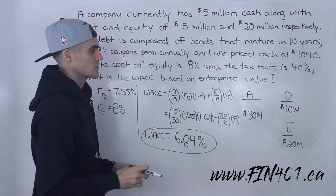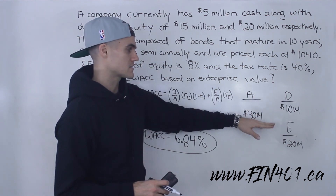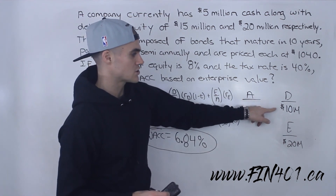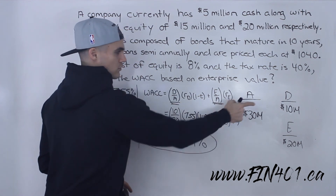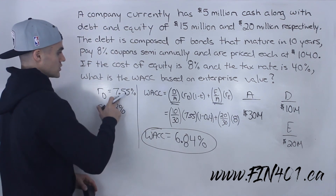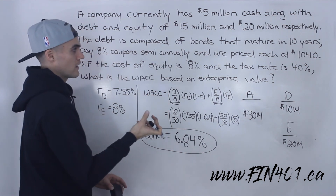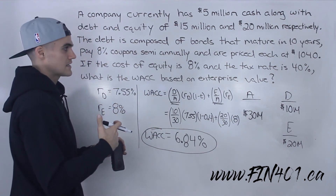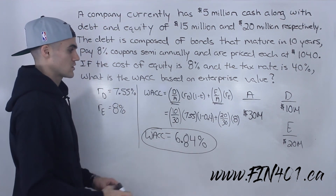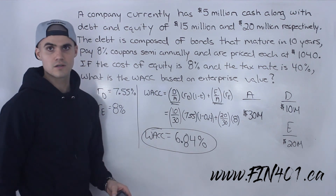To summarize what was different in this question: whenever you're given excess cash, reduce the debt by that excess cash and use the enterprise value on the balance sheet. Calculate the WACC weights with the new debt and new assets figure. Additionally, when given bonds with semi-annual coupons, the solved yield to maturity is a semi-annual rate — you must raise it to the power of two to get an effective annual rate, because the cost of debt is always in effective terms. Cost of equity was given; plug everything in and the WACC based on enterprise value is 6.84%.